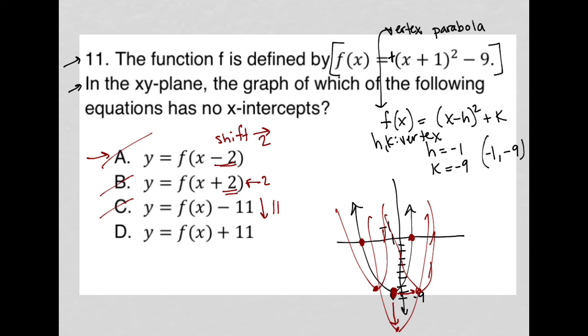But choice D, however, says I shift up 11 units. Now, shifting up 11 units would mean that I go from negative 9 on my y-axis to a positive 2, so my vertex would now be at negative 1, 2, and then I go up from there. By going up from there, I will never touch the x-axis and therefore, choice D is correct because I will never have x-intercepts.